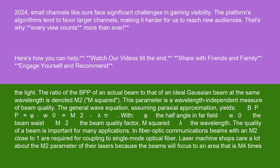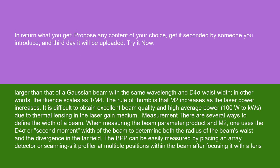The quality of a beam is important for many applications. In fiber optic communications, beams with an M² close to 1 are required for coupling to single-mode optical fiber. Laser machine shops care a lot about the M² parameter of their lasers because the beams will focus to an area that is M4 times larger than that of a Gaussian beam with the same wavelength and D4 sigma waist width. In other words, the fluence scales as 1 slash M4. The rule of thumb is that M² increases as the laser power increases. It is difficult to obtain excellent beam quality and high average power (100W to kWs) due to thermal lensing in the laser gain medium.